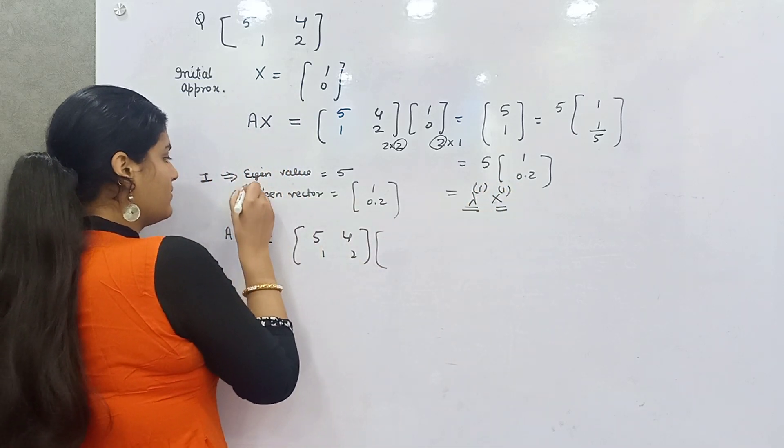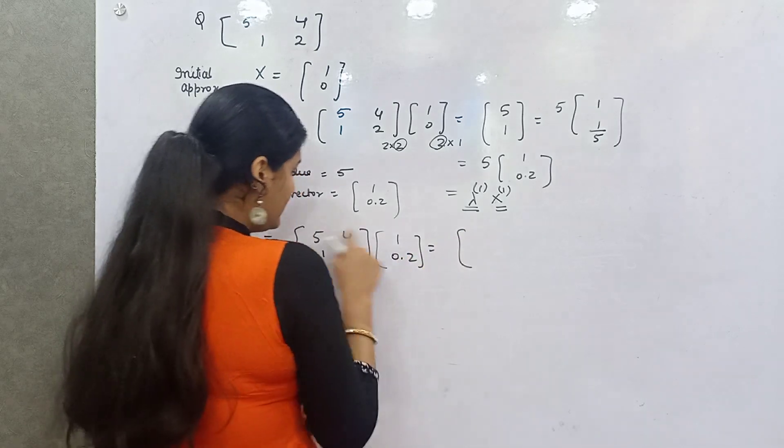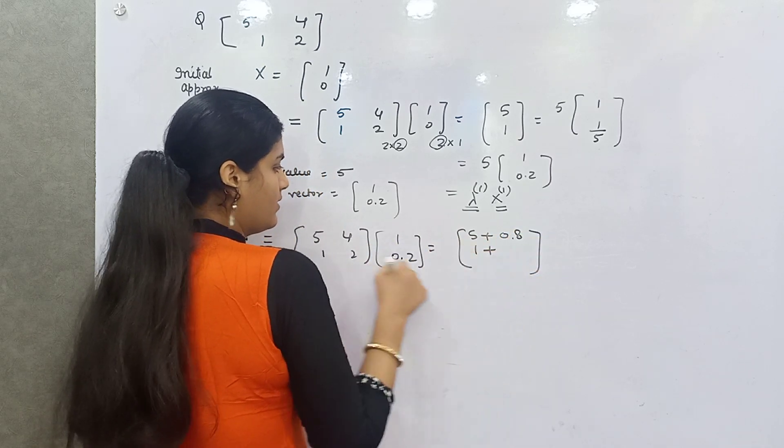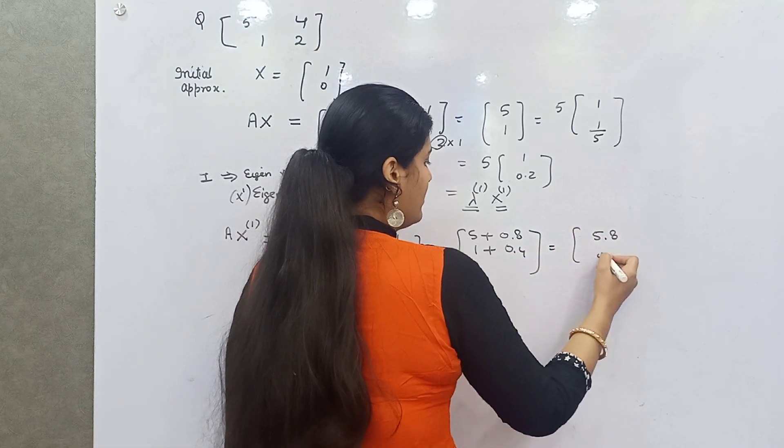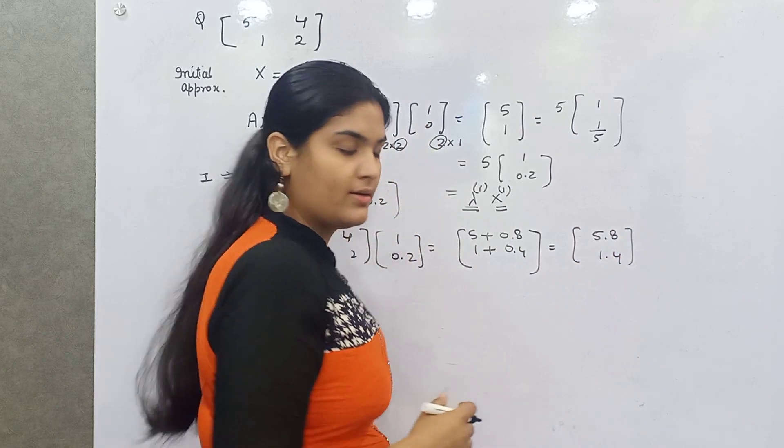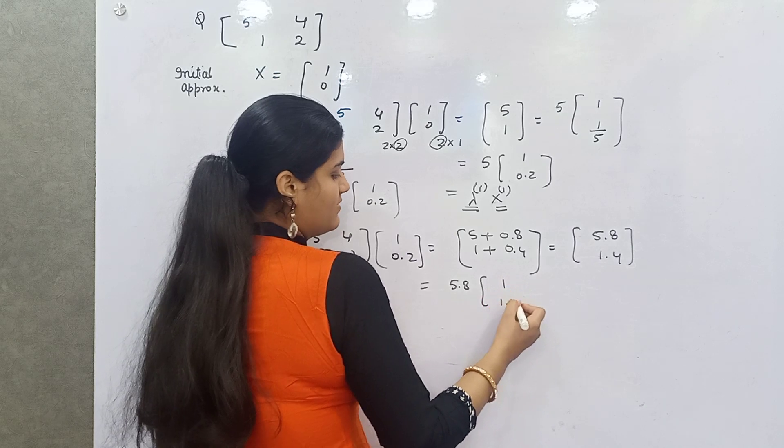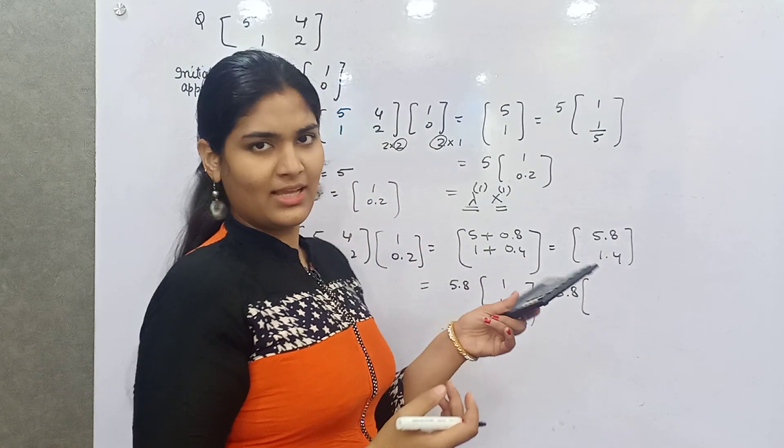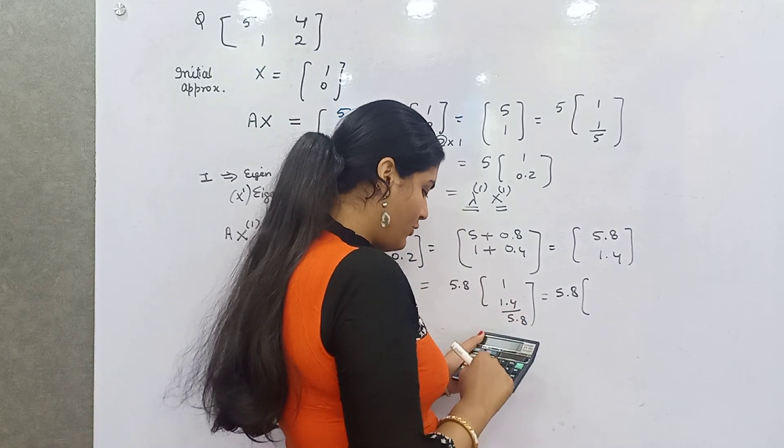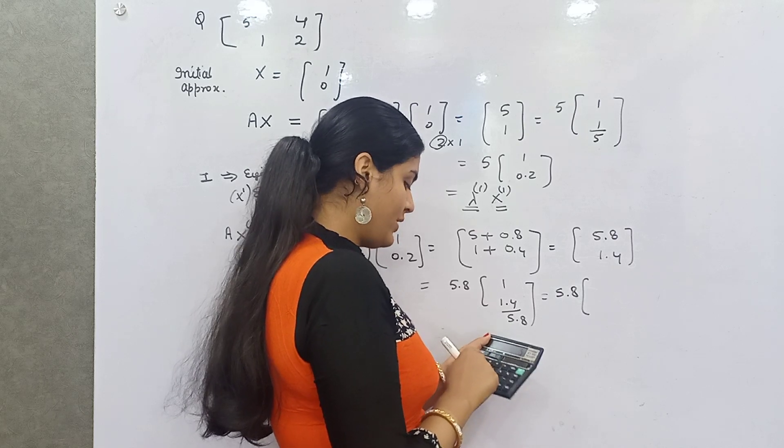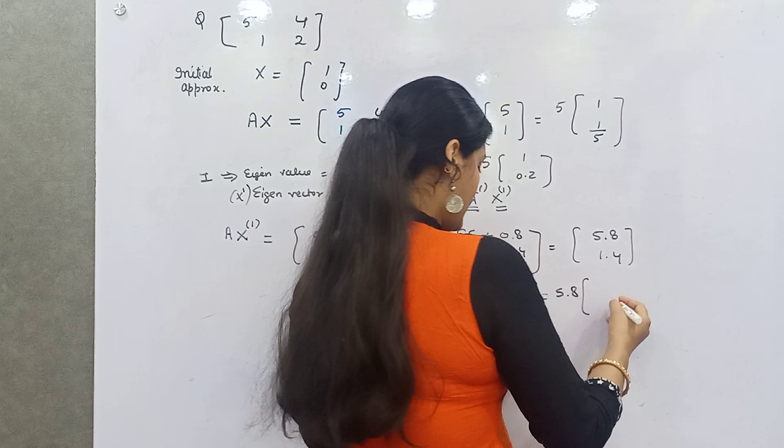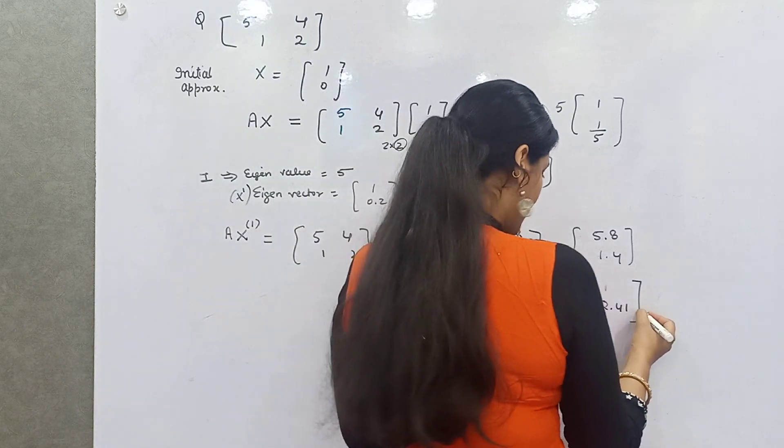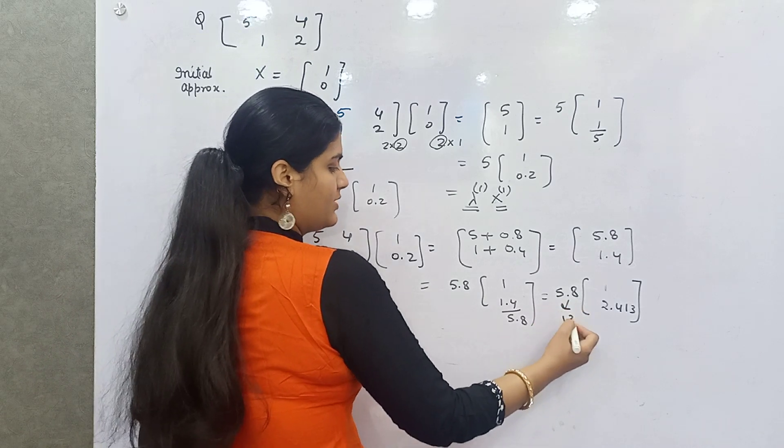X to the power 1 is [1; 0.2]. Similarly solve this: 5 times 1 is 5, 4 times 0.2 is 0.8, 1 times 1 is 1, this is 0.4. So 5.8 and 1.4. Again, take 5.8 common. 1.4 divided by 5.8, that is 0.241. This is your lambda 2 and this is your X2.